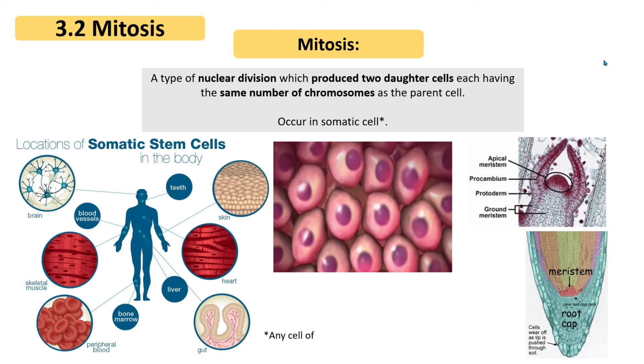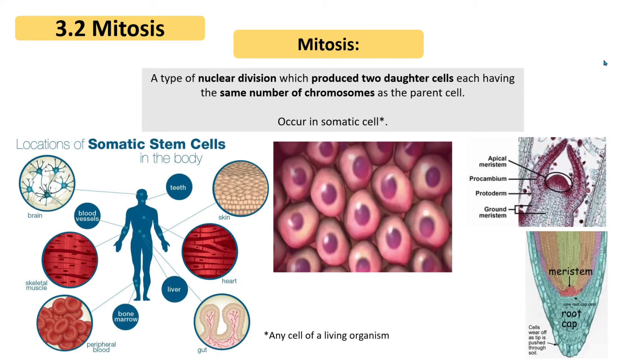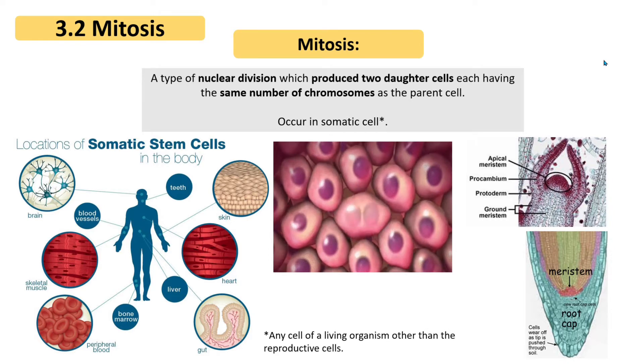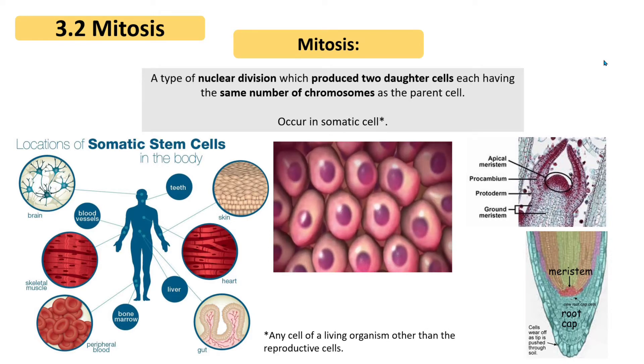In plants, mitosis actively occurs in meristem cells, found in the tips of the shoot and root.